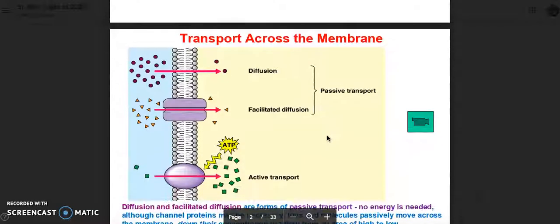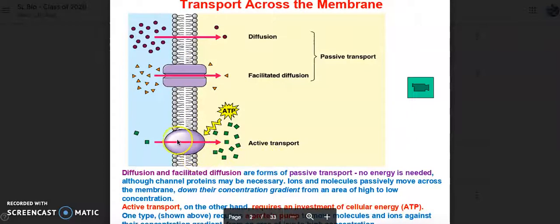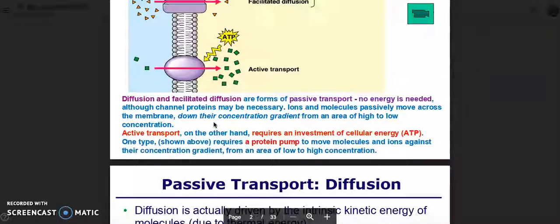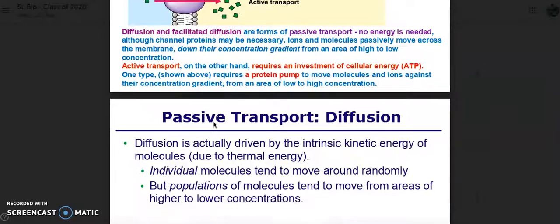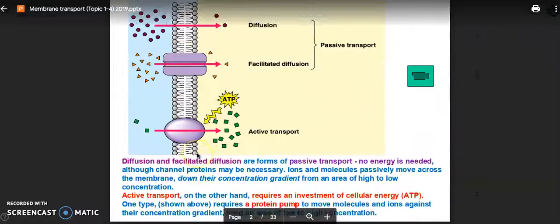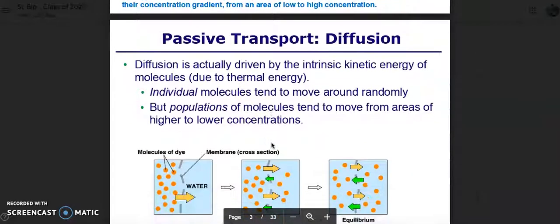Topic 1.4, membrane transport. There are a few different ways that can happen. We have passive transport, which would be either diffusion or facilitated diffusion using a protein, and then we also have active transport using ATP. Diffusion and facilitated diffusion are forms of passive transport. No energy is needed, although channel proteins may be used as necessary, and molecules passively move across the membrane down their concentration gradient from an area of high concentration to low. Active transport, on the other hand, requires an investment of cellular energy, ATP. One type shown above requires a protein pump to move molecules and ions against their concentration gradient from areas of low to high concentration.